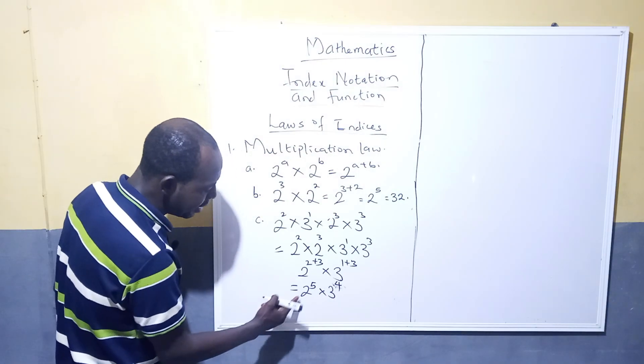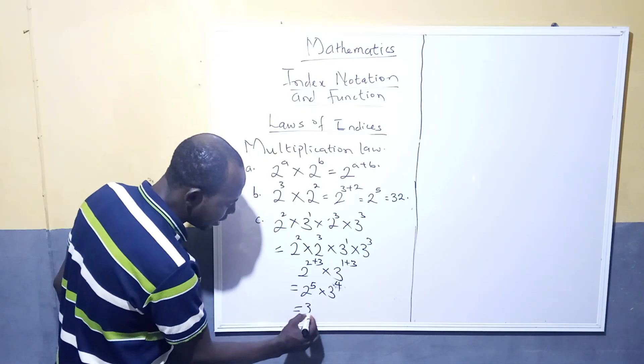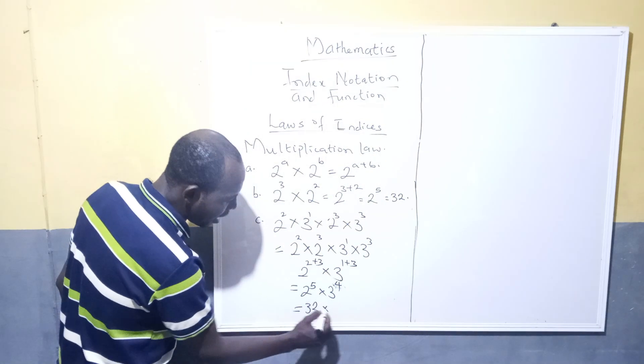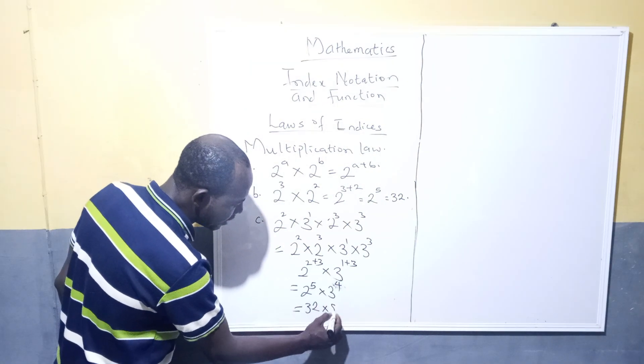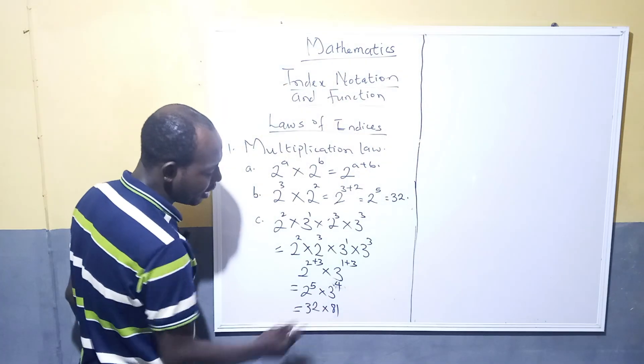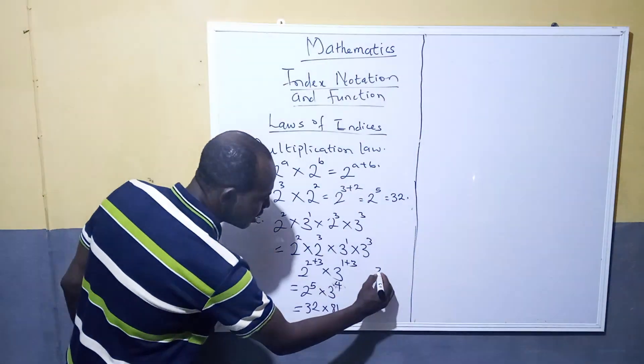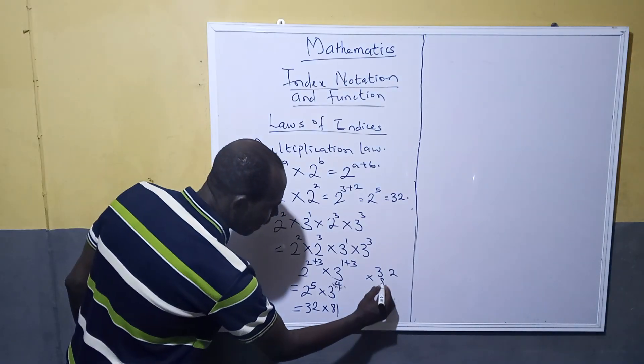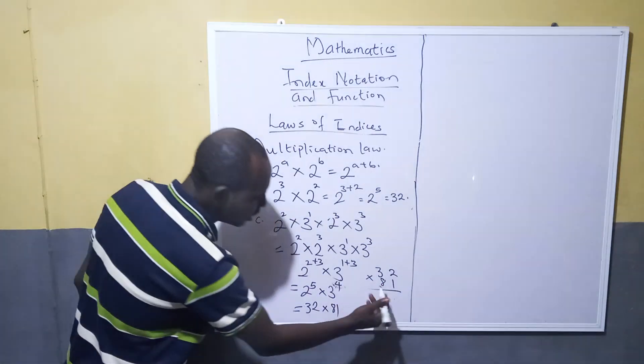Then 2 to the power of 5 will give me 32, multiplied by 3 to the power of 4, which is 81. And then you can solve the multiplication, which is 32 multiplied by 81.